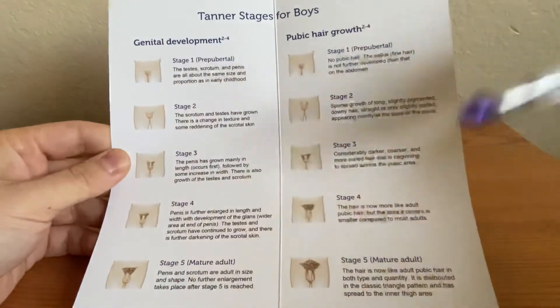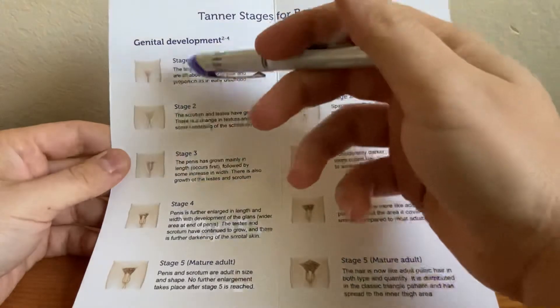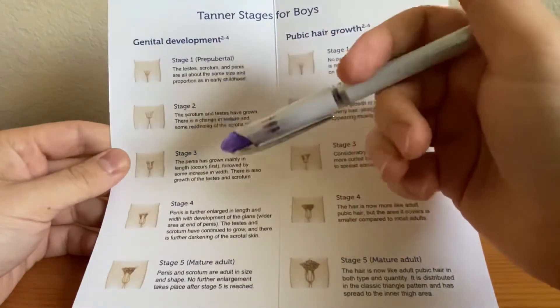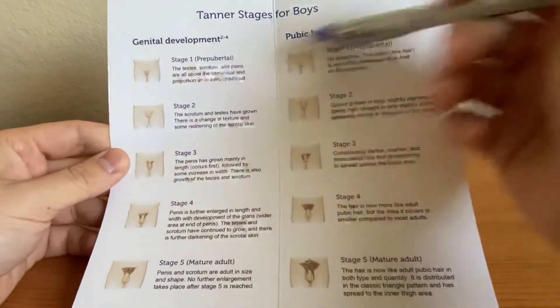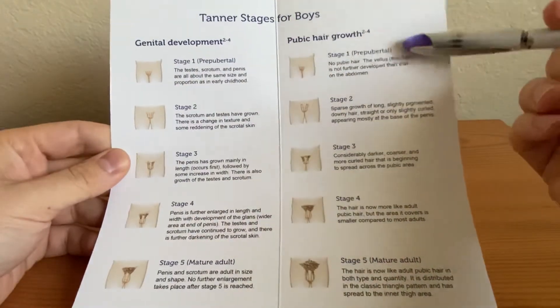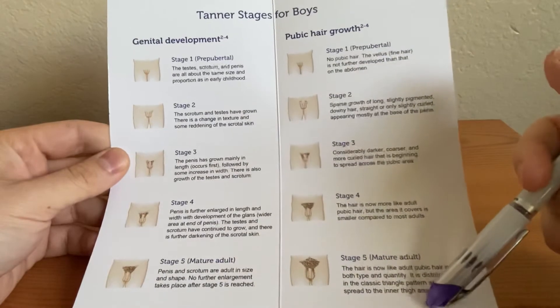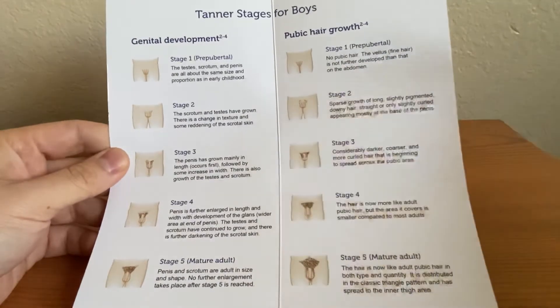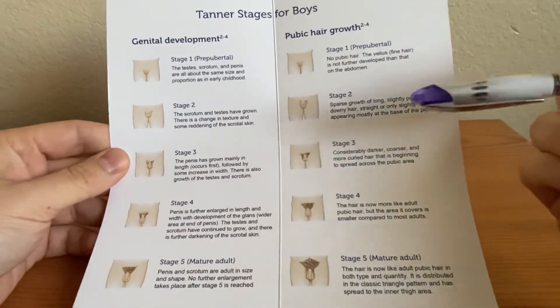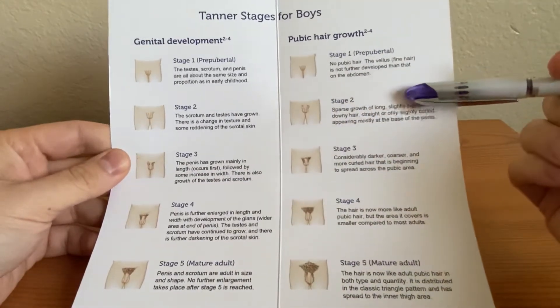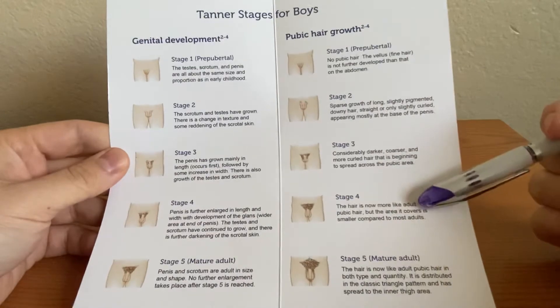Stage one and five are not really a factor here, because stage one is pretty much nothing going on, and stage five is pretty much mature development. So you really have to memorize and focus on stages two through four.